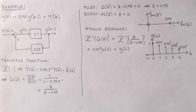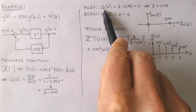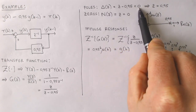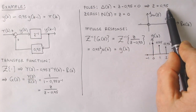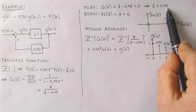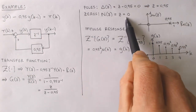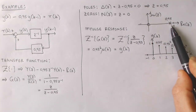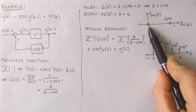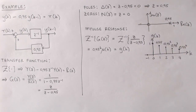We find the poles of the system as the roots of the denominator polynomial equal to zero, giving one pole at 0.95. We similarly calculate the zero of the system to be at z equal to zero. We plot the poles and zeros on the complex plane, drawing a cross for each pole and a circle for each zero. We will later attach meaning to pole and zero locations to understand system dynamics from the z-plane plot.